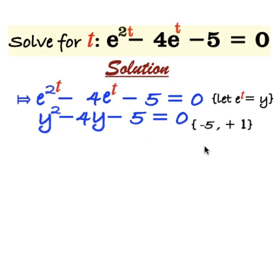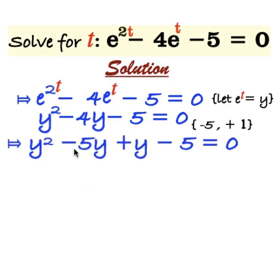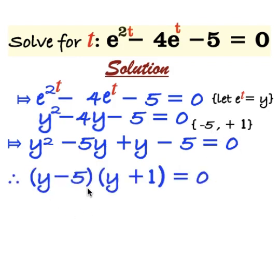Now, replace minus 4 with minus 5 plus 1. We have y squared minus 5y plus y minus 5 is equal to 0. Since the coefficient of y squared is 1, the factors of this quadratic equation are y minus 5 and y plus 1. Therefore, we factorize to get (y minus 5)(y plus 1) is equal to 0.